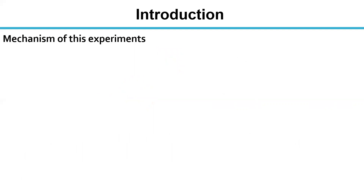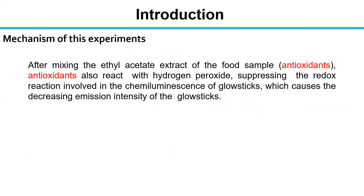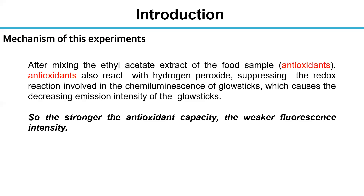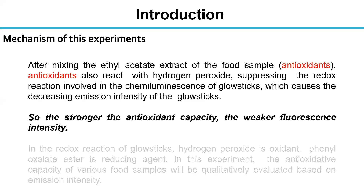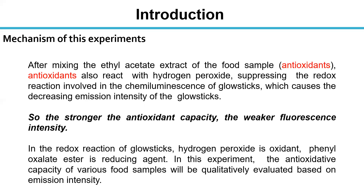Now we introduce the mechanism of this experiment. After mixing the ethyl acetate extract of the food sample, the antioxidants react with hydrogen peroxide, suppressing the redox reaction involved in the chemiluminescence of glow sticks. This causes decreasing emission intensity. So the stronger the antioxidant capacity, the weaker the fluorescence intensity. In the redox reaction of glow sticks, hydrogen peroxide is the oxidant and phenyl oxalate ester is the reducing agent. The antioxidant capacity of various food samples will be qualitatively evaluated based on emission intensity.